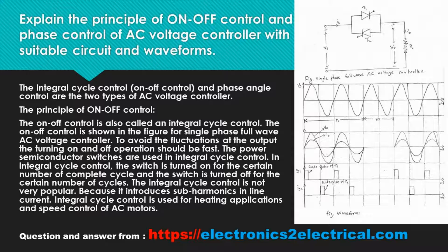In integral cycle control, the switch is turned on for a certain number of complete cycles and the switch is turned off for a certain number of cycles. The integral cycle control is not very popular because it introduces subharmonics in line current.